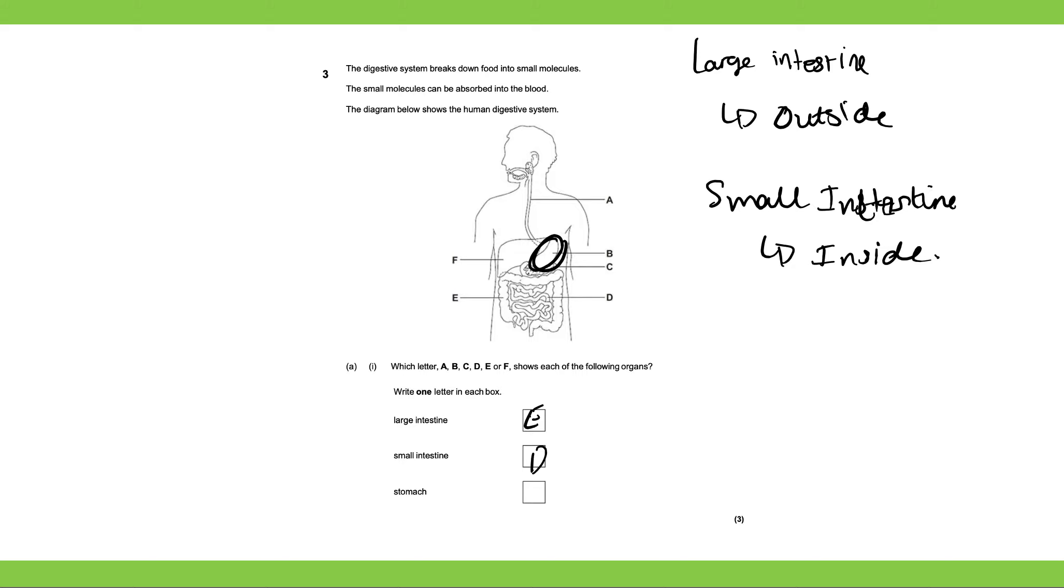The stomach is actually this one over here. Okay, I'm just going to highlight it so you can see. The stomach is this one over here. Okay, so the stomach is letter B, and having those three letters written in the correct places will get you the three marks.